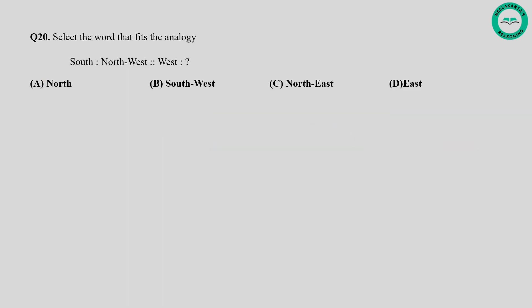Question number twenty: Select the word that fits the analogy — South, North, West, blank. South is the opposite of North. Now similarly, for West, the opposite is East. If we draw a compass diagram with East, West, North, and South — North is opposite and to the left side of South. Similarly for West, the opposite is East and to the left side is North, giving Northeast. So option C is correct.